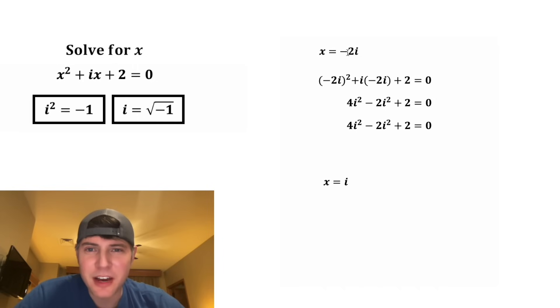For the next step, let's copy this down. And then i squared is equal to negative 1. So in the place of both of these i squareds, we can plug in negative 1. 4 times negative 1 is negative 4. And negative 2 times negative 1 is positive 2. And then negative 4 plus 2 plus 2 is equal to 0. So we end up with 0 equals 0. So the first one checks out.